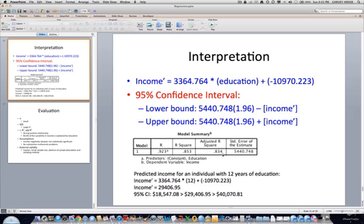By multiplying the standard error of the estimate by 1.96, which is the z-score equivalent of .05, I can compute the upper and lower confidence intervals. So what I did was to multiply 5440.748 times 1.96,